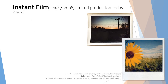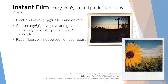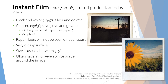Instant film was invented in 1947 using silver and gelatin to create a black and white image. Colored instant film using dye, silver, and gelatin was developed in 1963. Mass production of both types was stopped in 2008, but there is still limited production of instant film today. There are two main supports: the first being on paper, known as a peel apart, and the second on plastic. The paper fibers will not be seen on peel apart film, and both types will have a very glossy surface. Instant film generally comes in sizes from 3 to 5 inches and will often have an uneven white border around the image that is generally thicker on the bottom. It is common for instant film to have a manufacturer stamp on the back, but these may be missing with the peel apart versions.